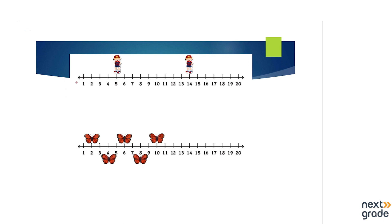We will take a small example of this number line. I have placed some images so that we can identify on this number line where the boy is standing. If we see and count, we can see that the boy is actually standing on number 5. Then we will be moving on the number line — it is actually at number 14. So this boy is standing on number 5 and the other is standing on number 14 on the number line.